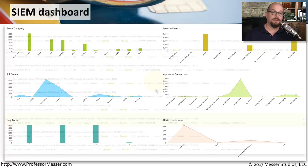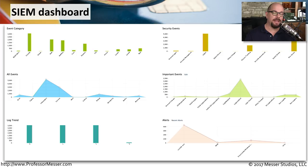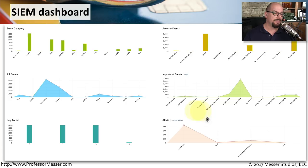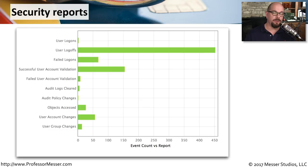Instead of looking through pages of real-time logs, most SIEMs allow you to collapse all that information into a single dashboard. This dashboard includes event categories such as security events, all events, important events, and alerts. You can easily see events that are immediately occurring, broken out by informational, success, alert, debug, or even emergency events. Many SIEMs also have a built-in report generator, so you can create a weekly or monthly report that rolls up all collected data into a single graphical view.